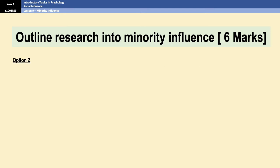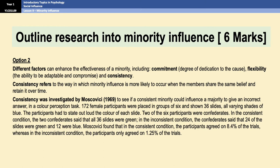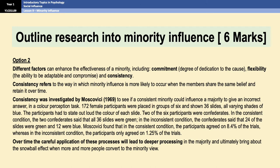Option two includes far less about the actual theory, but does include the blue-green slide study, and a little bit of theory at the bottom about the process of change. Both outlines are around 200 words long and both are good answers to the question. Just keep in mind you will need to fit your evaluation points to your outline. If you're using option two and talking about Moscovici, you'll need at least one evaluation point for the study. And if you've used Moscovici in your outline, you can't use Moscovici as research support — because you don't want to be repeating yourself.